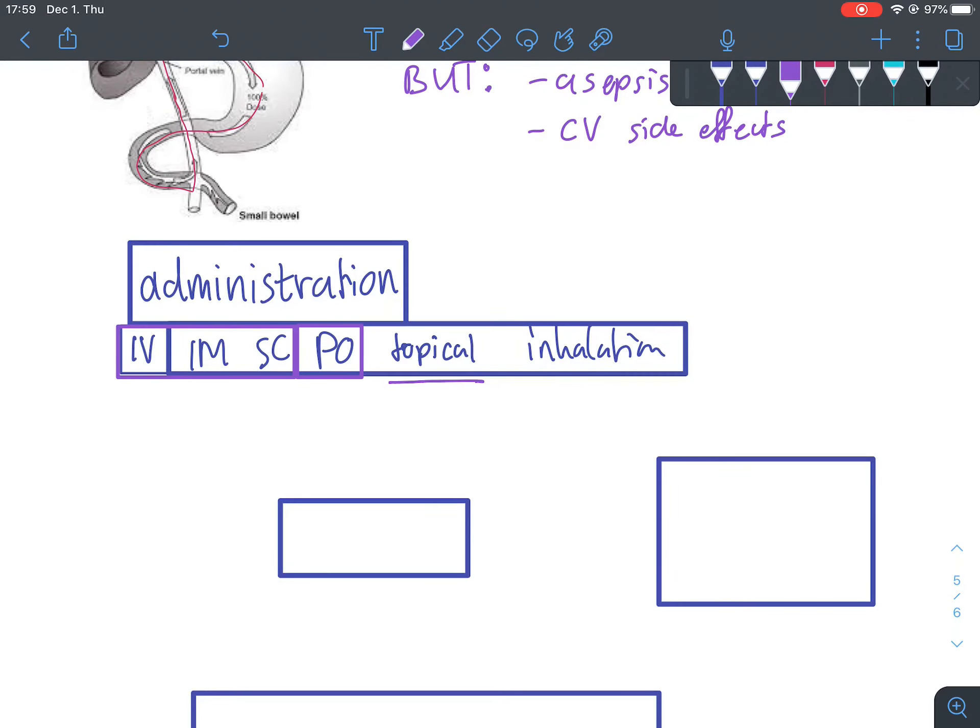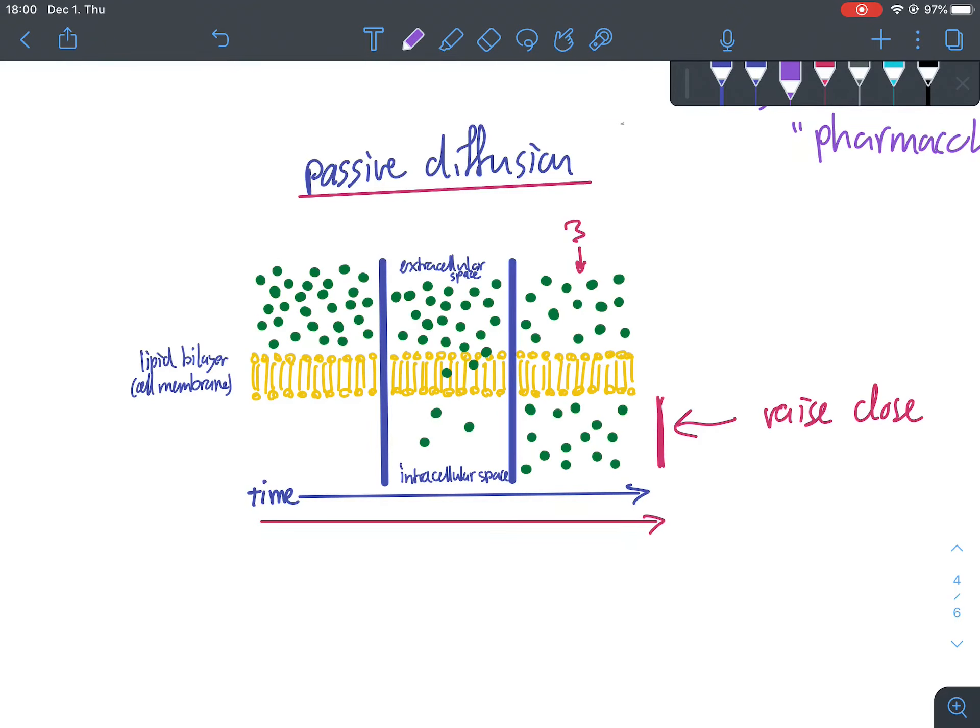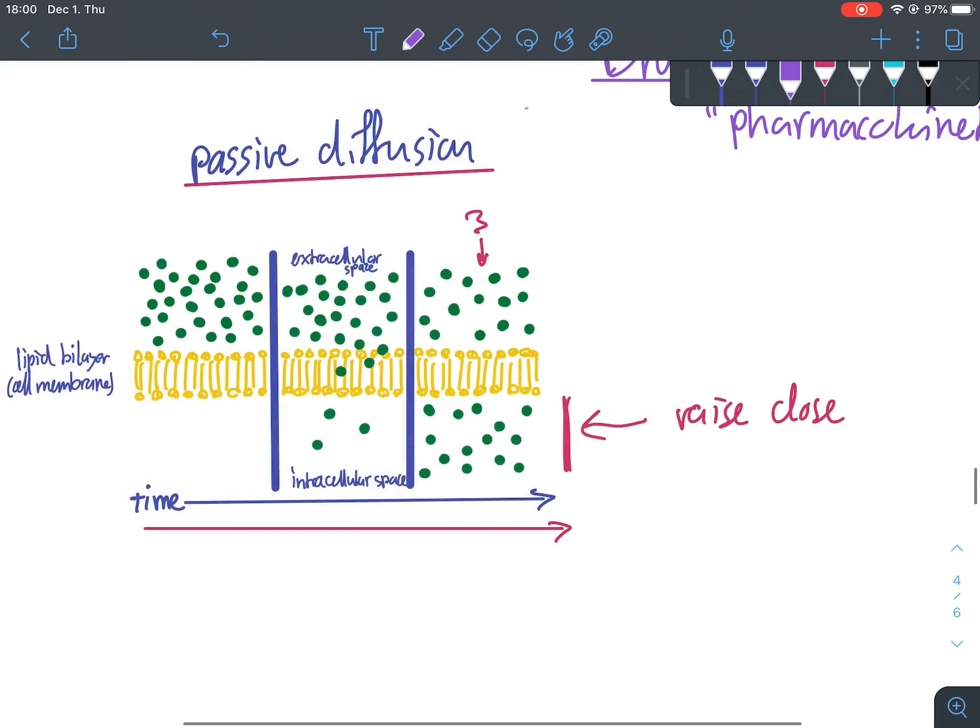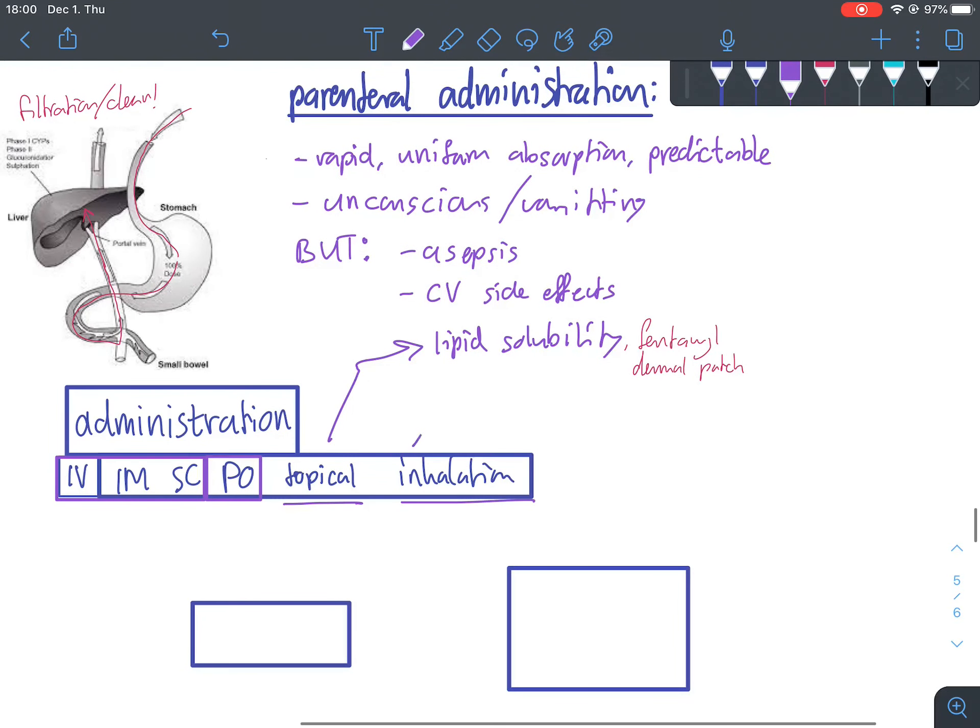If we look at our other administration routes, topical and inhalation, topical medication absorption is going to depend here on the lipid solubility of the drug. So if it's very lipid soluble, as you know, the lipid bilayer, only lipid soluble medication can diffuse through it. So if a drug is very lipid soluble, then it will be able to be absorbed pretty effectively from the skin. And a pretty popular example here is the fentanyl dermal patch. And for inhalation, we use this for gaseous anesthetics like halothane.